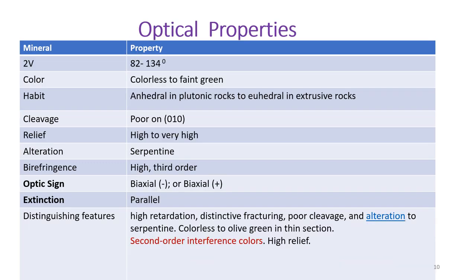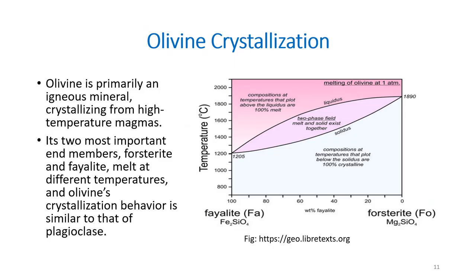The 2V angle is about 82° to 134° and color in thin section is colorless to faint green. Olivines are anhedral in plutonic rocks and euhedral in extrusive rocks. Cleavage is poor on {010} and relief is high. Olivine commonly alters to serpentine. Birefringence is high, showing third-order interference colors. Forsterite is biaxial negative and fayalite is biaxial positive. Extinction is parallel. Distinguishing features include high retardation, distinctive fracturing, alteration to serpentine, and colorless to olive-green color in thin section with second-order interference colors.